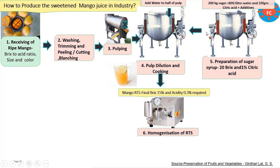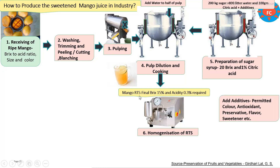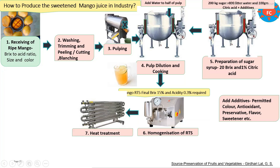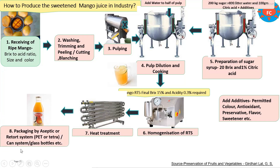The sugar syrup is prepared separately in a steam jacketed kettle. After preparation it is filtered and added to the mango pulp for standardization. As per the requirements — mango RTS minimum requirement is 10 degrees Brix, but for sweetened mango juice it is maintained at least 15% TSS and 0.3% acidity. After standardization, the sweetened mango juice is passed through a pressure homogenizer for size reduction, then passed into heat exchangers for stabilization treatment, and finally the packaging system is carried out.